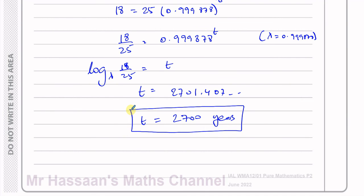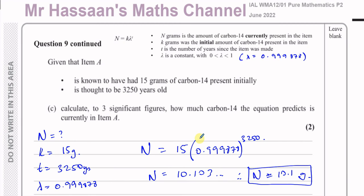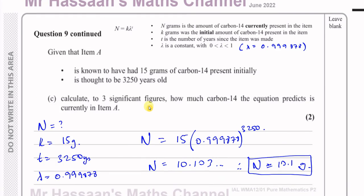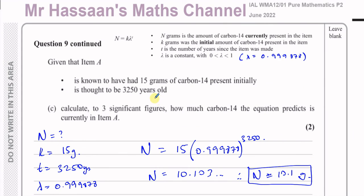That was a straightforward logarithms question in the context of this exponential decay scenario. That answers question number 9 — not too difficult. Other questions from the June 2022 P2 paper can be found in the playlist, along with a playlist for the topic of logarithms and exponentials from P2. Thank you for watching — see you soon.